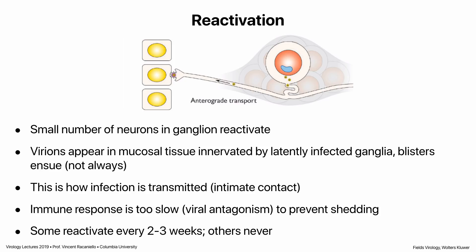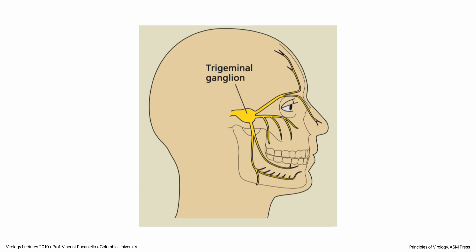The virus must eventually reactivate — producing infectious virus to spread to another host — otherwise it dies with you. In each ganglia, a small number of neurons reactivate, synthesize virus particles, which travel down the nerve by anterograde transport, infect epithelial cells innervated by that ganglia, and if in the mouth or on the lips the virus is shed and spread to someone else by kissing or talking. The immune response is too slow due to viral antagonisms, so before it's halted the virus has already moved on to the epithelium. Some people have this happen every few weeks; others never.